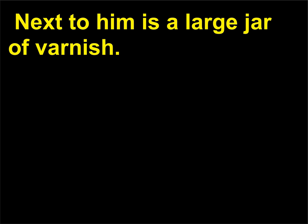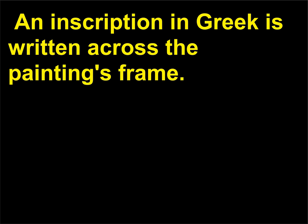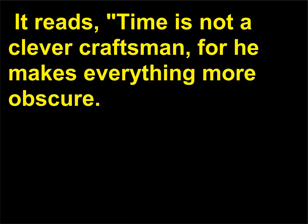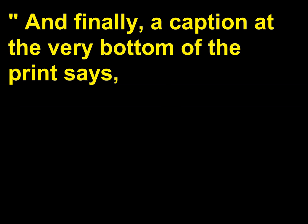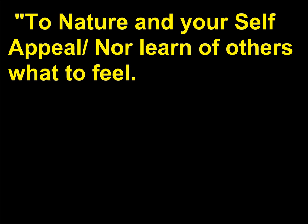Next to him is a large jar of varnish. An inscription in Greek is written across the painting's frame. It reads: time is not a clever craftsman, for he makes everything more obscure. In printed text just below the figure of Time, another message reads: as statues molder into worth. And a caption at the very bottom of the print says: To nature and yourself appeal — nor learn of others what to feel.